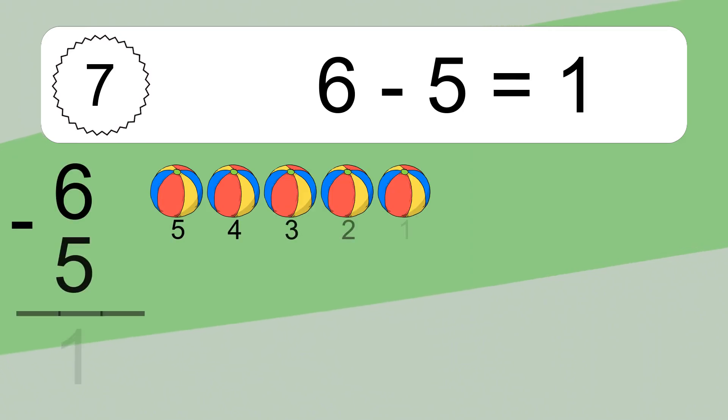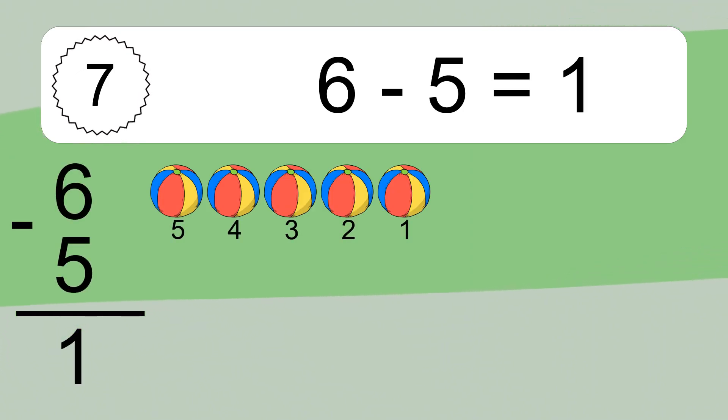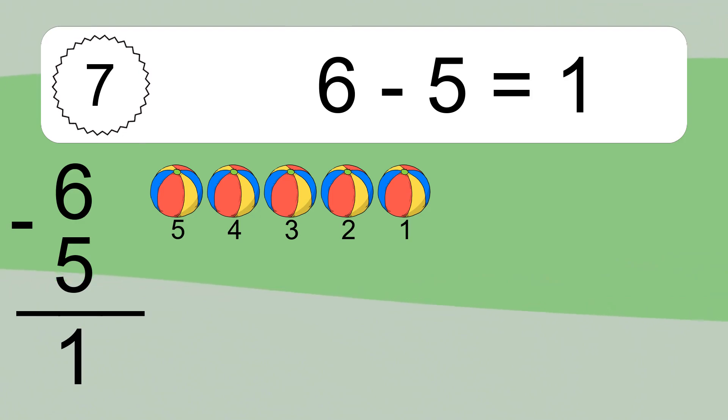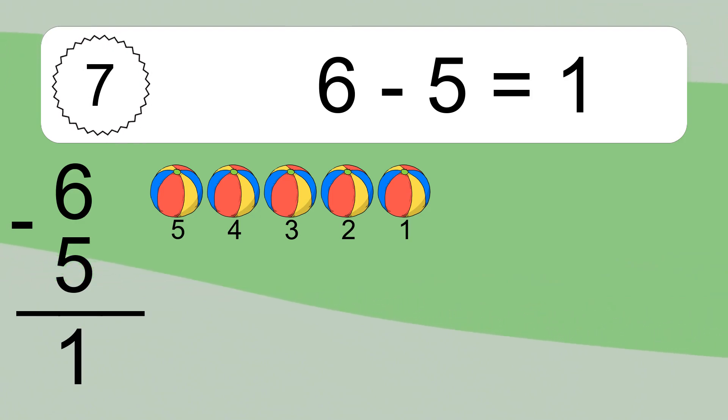6 minus 5 equals what? 6 minus 5 equals 1. Let's count it: 5, 4, 3, 2, 1.